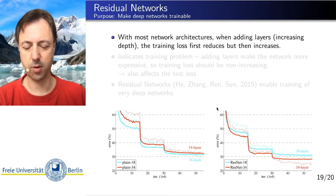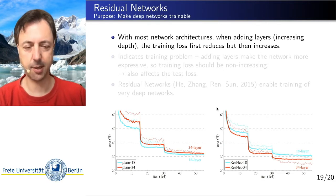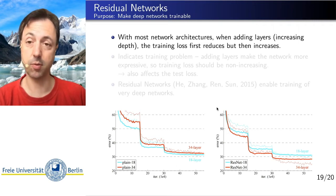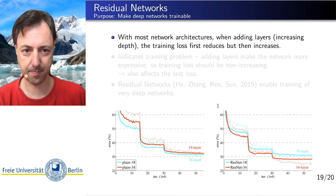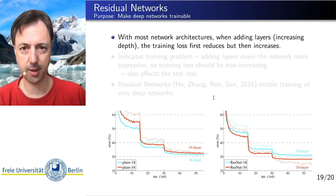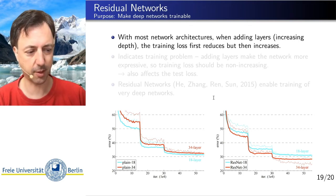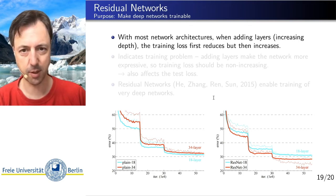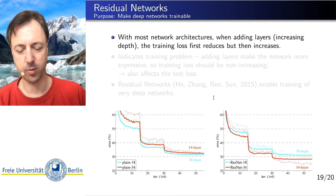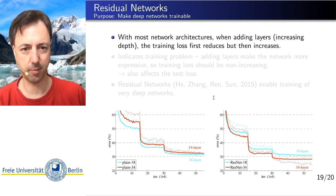If you make a neural network deeper by adding more layers, then you are increasing the expressivity of the function that you are training. So if you look just at the training error, which indicates or at least contains the bias from lacking expressivity of your function, then the training error should consistently reduce as you make the network deeper and therefore more expressive.